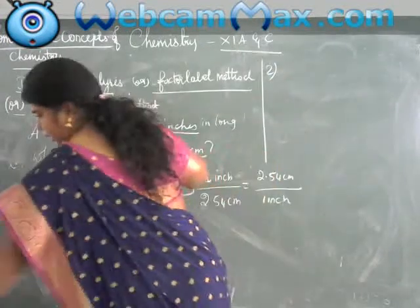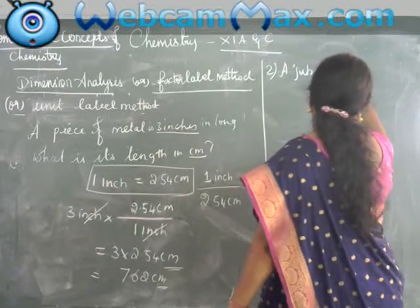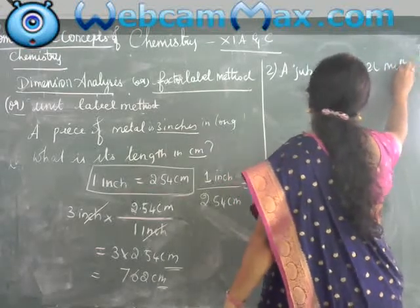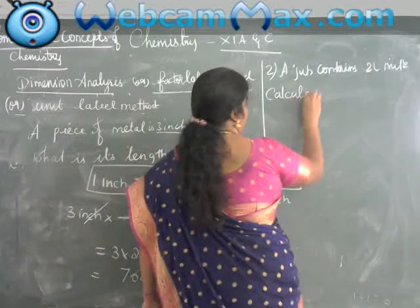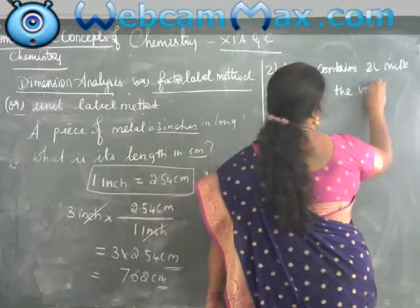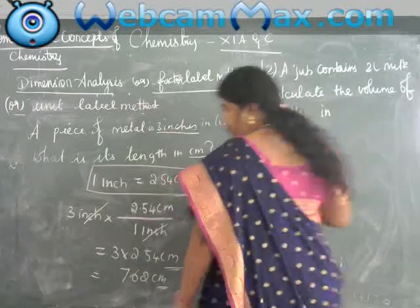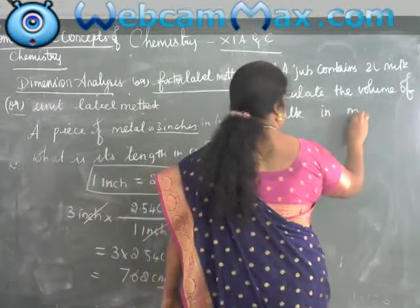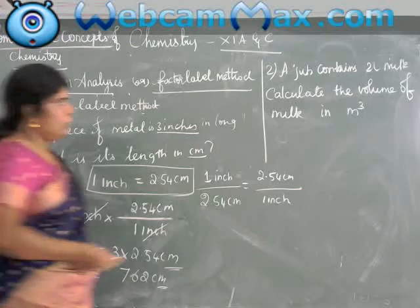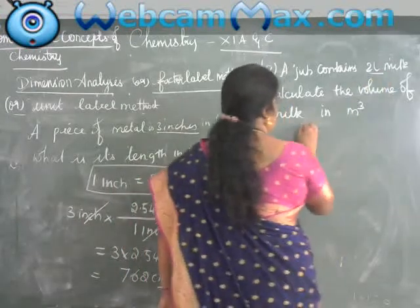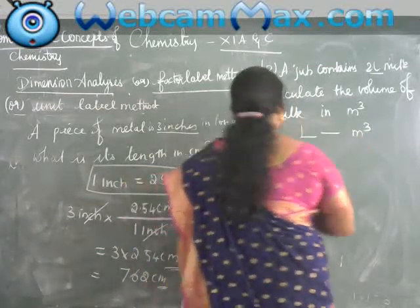Second sum: a jug contains 2 liters of milk. Calculate the volume of the milk in meter cube. So we know what we want to convert — liters into meter cube.